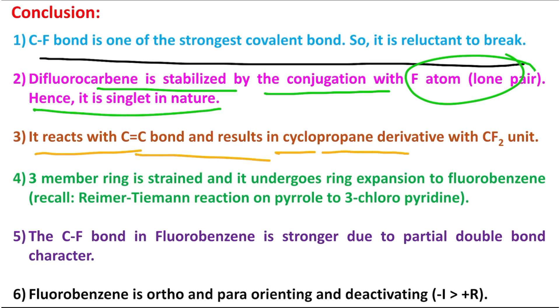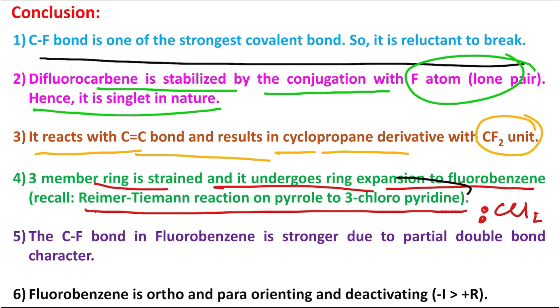It reacts with carbon-carbon double bond, results in a cyclopropane ring formation with a CF2 unit attached. Now this three-member ring is strained and it can undergo ring expansion to fluorobenzene. And in this case I suggest you, recall the Reimer-Tiemann reaction of pyrrole with dichlorocarbene CCl2, similar carbene. And in this case it also produces 3-chloropyridine. I have already discussed a dedicated lecture, please visit. I shall provide the link.